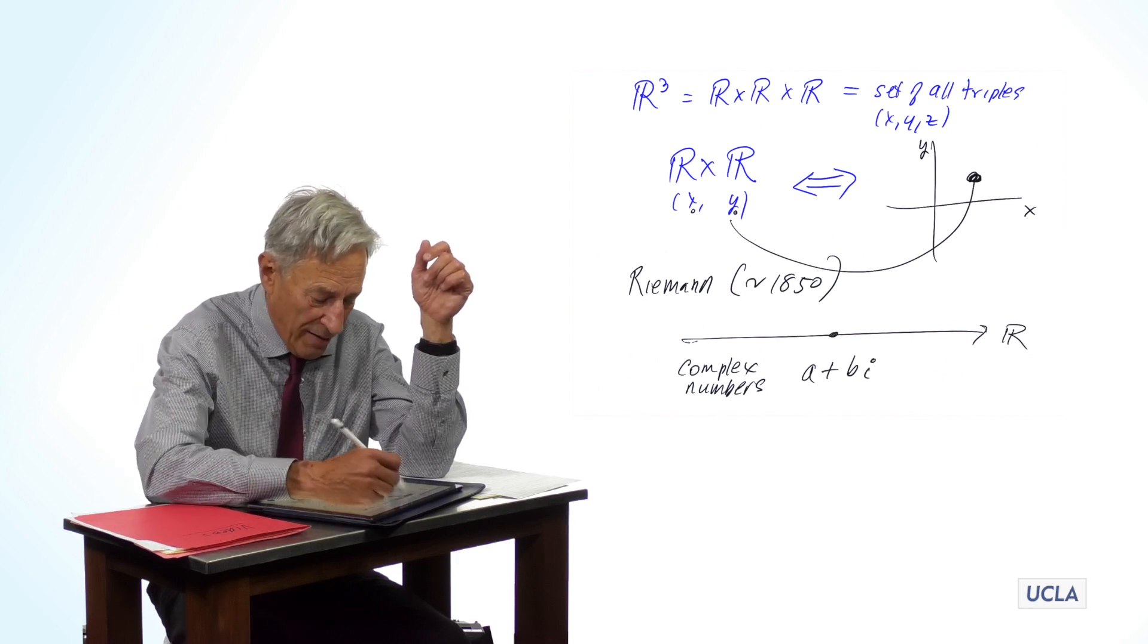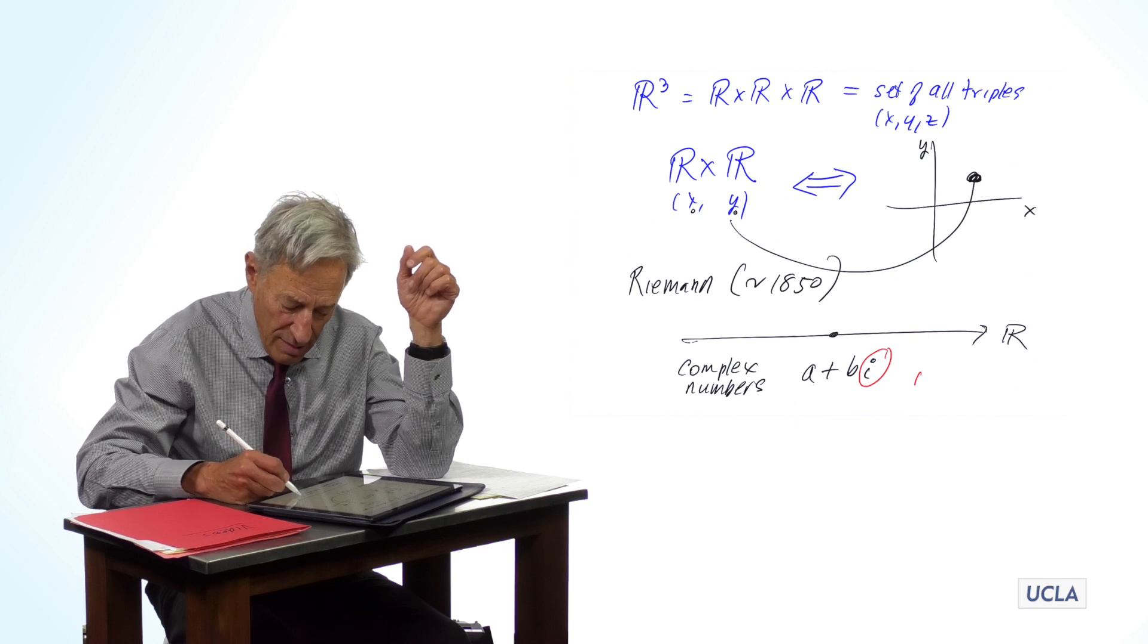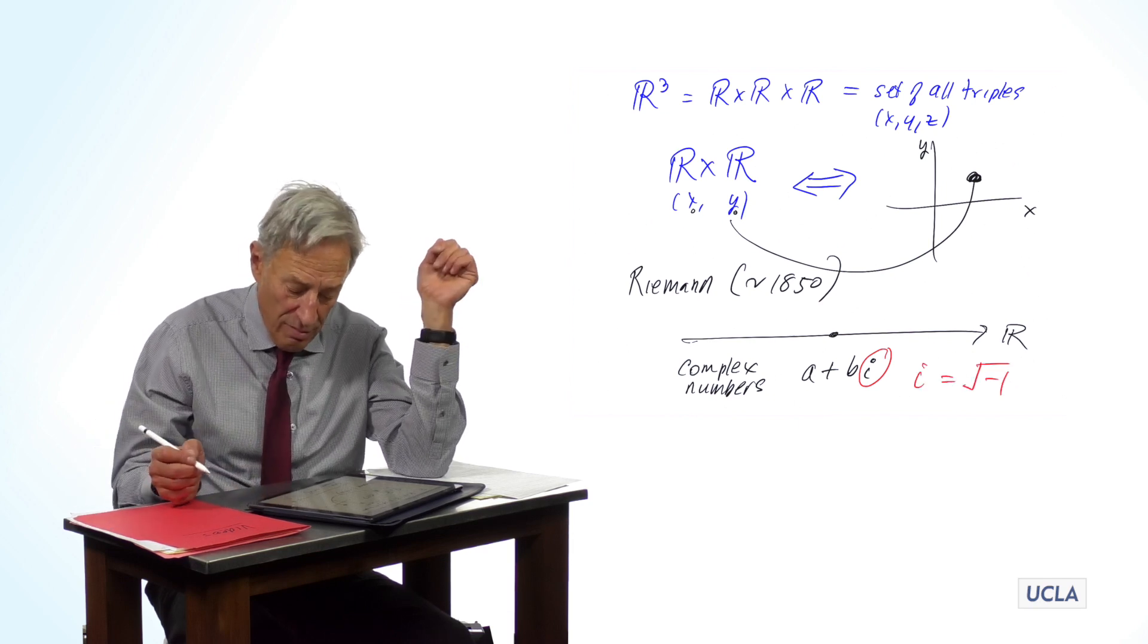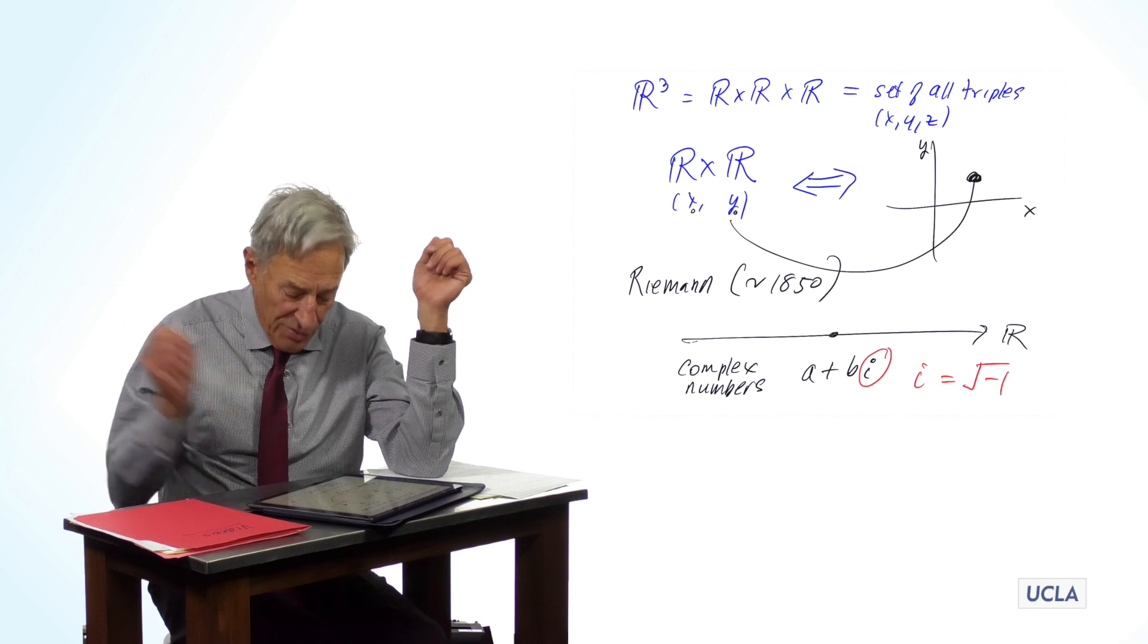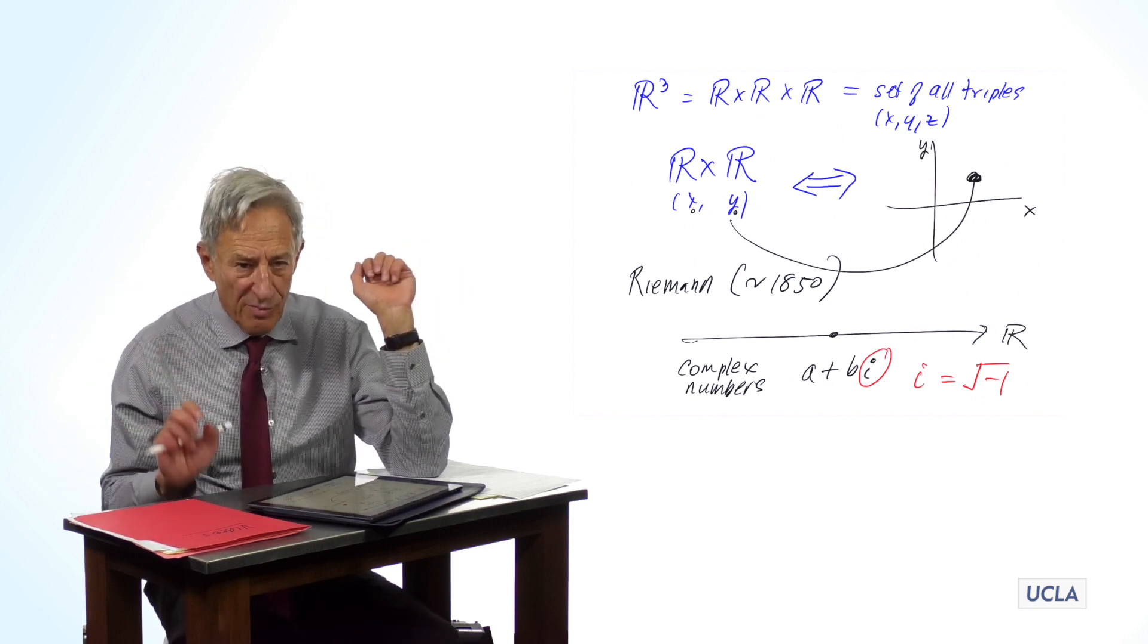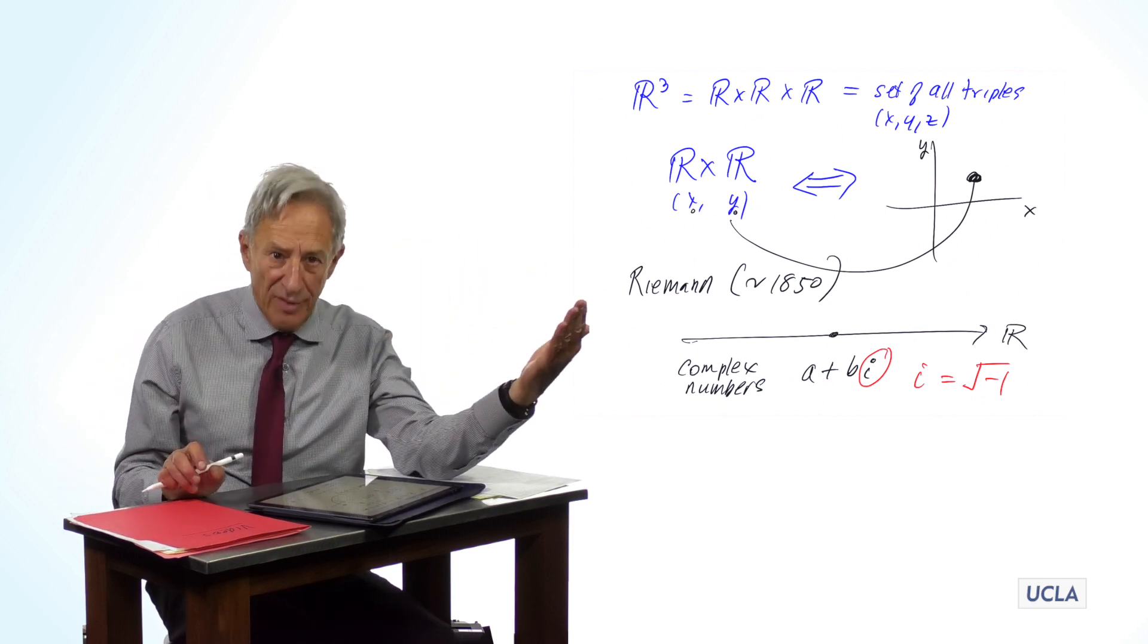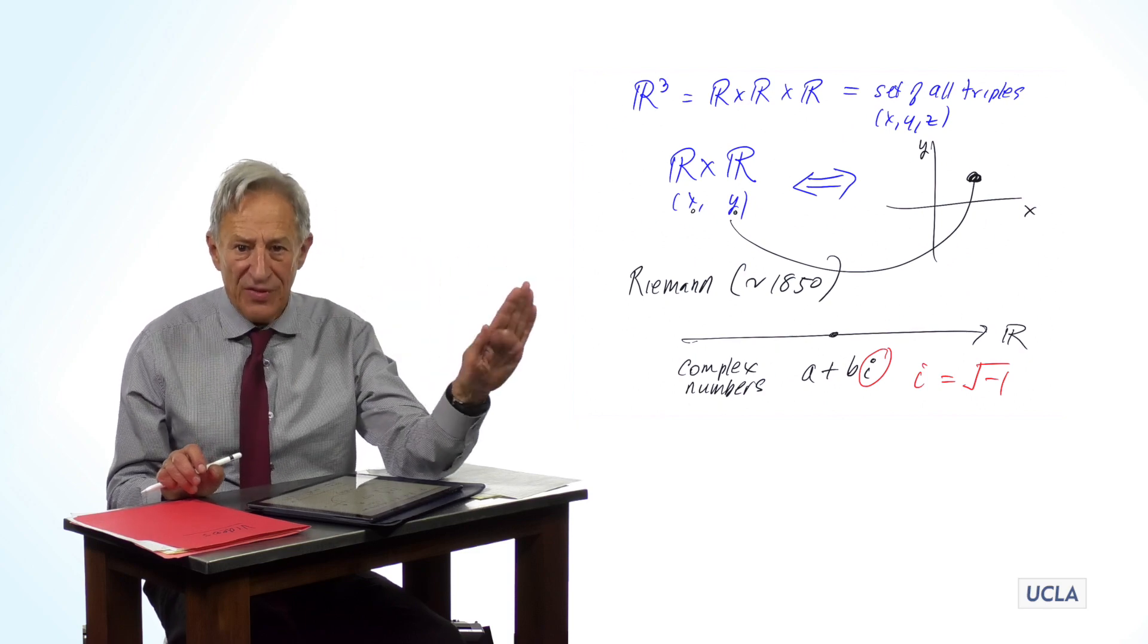where i is the square root of minus one. And those numbers are complex numbers, and they are opposed to real numbers. But that's what the word real means there.